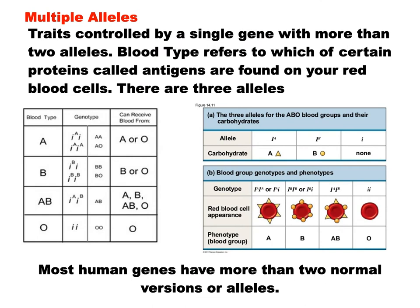Let's talk about multiple alleles. Most humans have more than two versions of alleles for a lot of characteristics. It's not simple like Mendel's pea plants — there's not just big-T or little-T for hair color. A famous example of multiple alleles, as well as co-dominance, is blood types. You can be type A, type B, type AB, or type O.